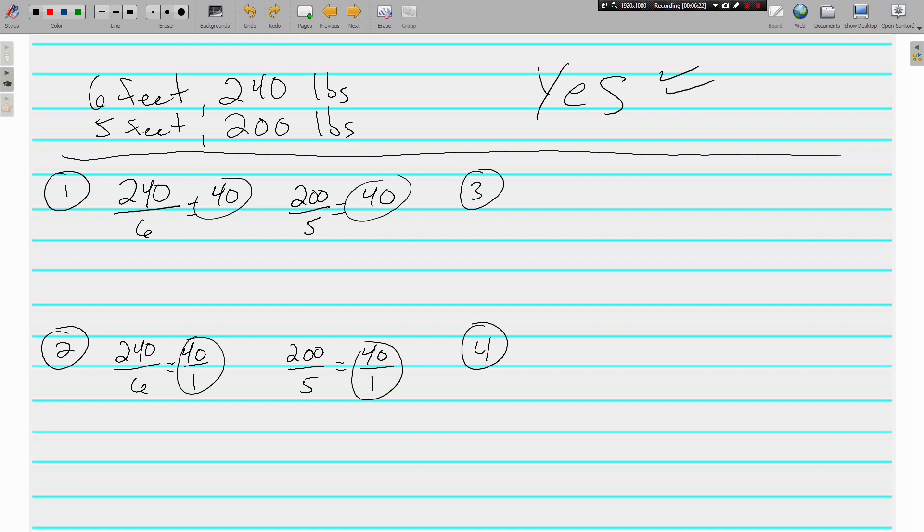Third way is common denominator. Write the fractions again. 240 over 6 and 200 over 5. Oh, 6 and 5 again. So our common denominator is 30 for both of them. 6 times 5 is 30. So 240 times 5 is 1,200. 5 times 6 is 30. So 200 times 6 is 1,200. Again, we've got the same thing. We know they're equivalent, which means my two expressions are proportional.